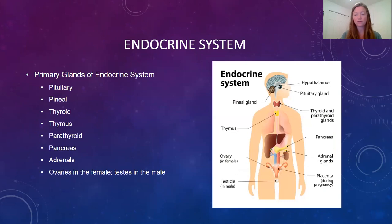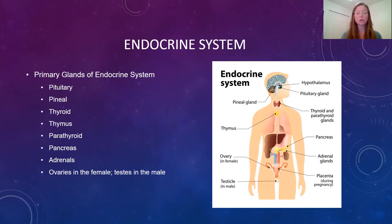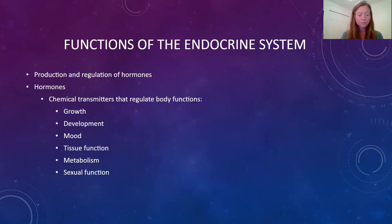Our endocrine system includes organs — which when referring to the endocrine system are also called glands — such as the pituitary, ovaries, testes, pancreas, and others. The pituitary gland is sometimes called the master gland of the body because it has quite a bit of control and influence over the function of many of the other glands. The endocrine system controls the function of our organs and tissues at a cellular level — these glands secrete hormones that target certain cells and tell those organs and cells what to do.